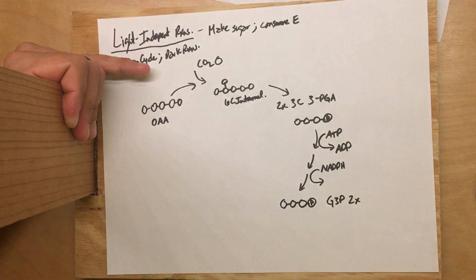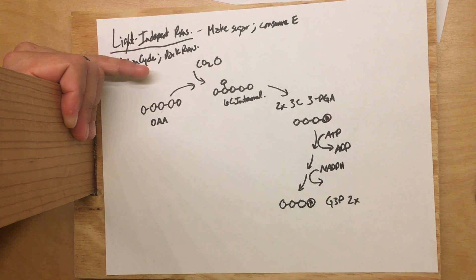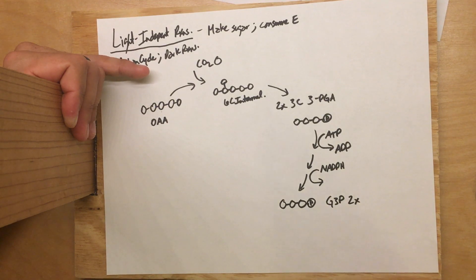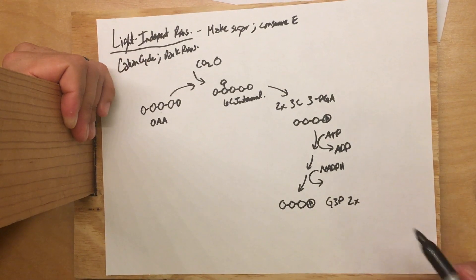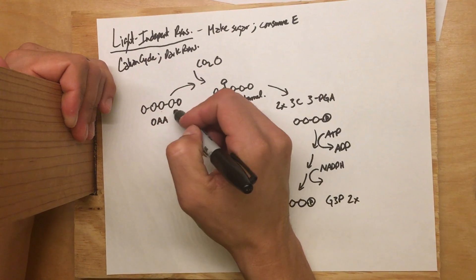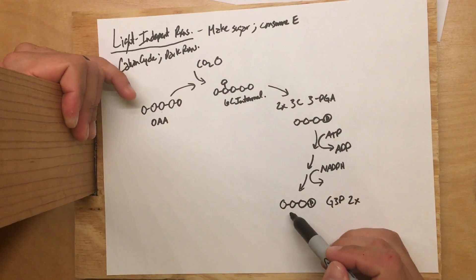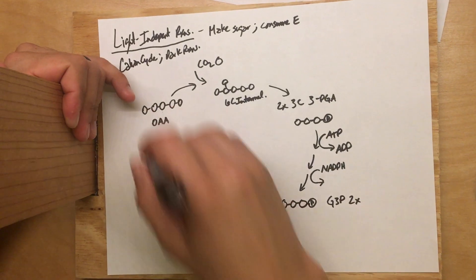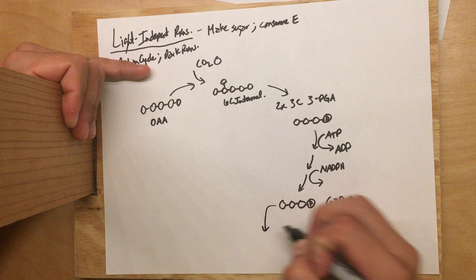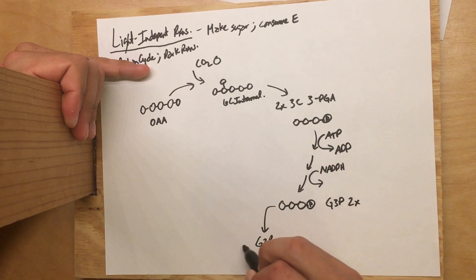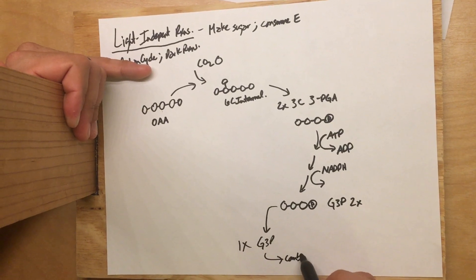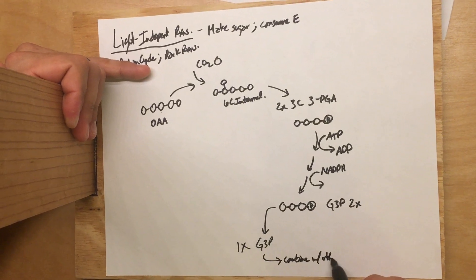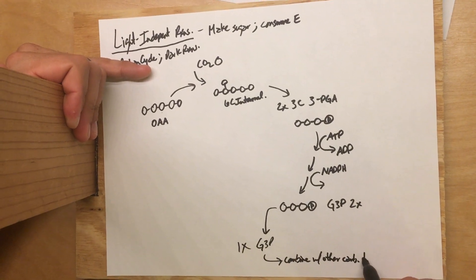This G3P is a totally energetic, useful sugar, and we've got two of them. At this point we could take those two G3Ps, smoosh them together, and make a six-carbon glucose molecule. But the problem is that this is a cycle, so we want to get back to this five-carbon sugar. If we just take both of those three-carbon sugars away, we're never going to be able to recreate what we started with, and it won't be a cycle. So instead, one of these G3Ps is going to leave.